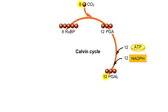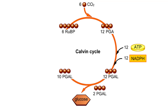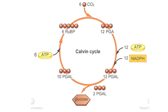Two of the PGAL molecules combine to form the six-carbon sugar glucose. The glucose will enter other reactions that form carbohydrates. The remaining 10 PGAL get phosphate groups from ATP, which primes them for the reactions that regenerate RuBP, thus completing the cycle.